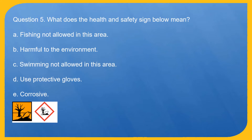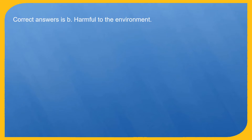Question 5. What does the health and safety sign below mean? A. Fishing not allowed in this area. B. Harmful to the environment. C. Swimming not allowed in this area. D. Use protective gloves. E. Corrosive. Correct answer is B. Harmful to the environment.